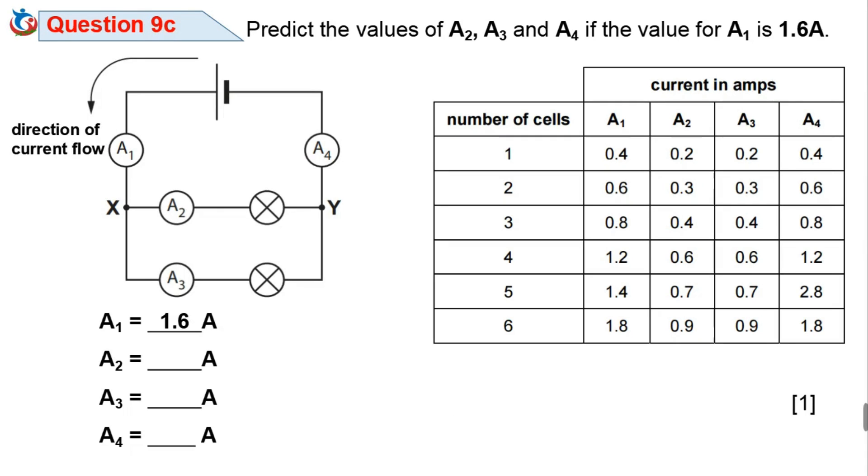Question 9c. Predict the values of A2, A3, and A4 if the value of A1 is 1.6 amps. With the explanation from question 9b, we can easily predict results when A1 is 1.6 amps. A2 will be half of A1 which is 0.8, A3 will read the same result as A2 which is also 0.8, and A4 will read the same result as A1 which is 1.6. This is as simple as ABC and you are good to go.